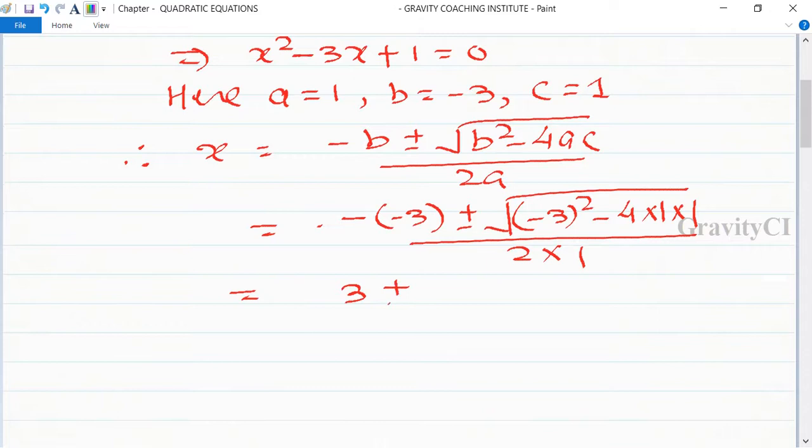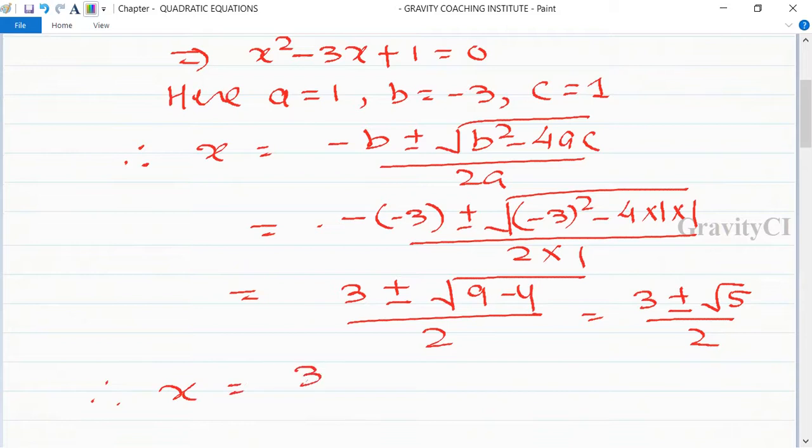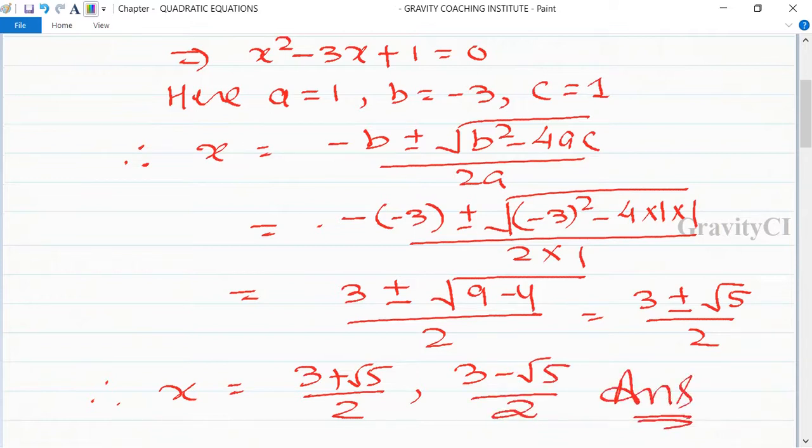So is equal to 3 plus minus root 5 upon 2. So therefore x is equal to 3 plus root 5 upon 2, comma, 3 minus root 5 upon 2, which is the required value of x.